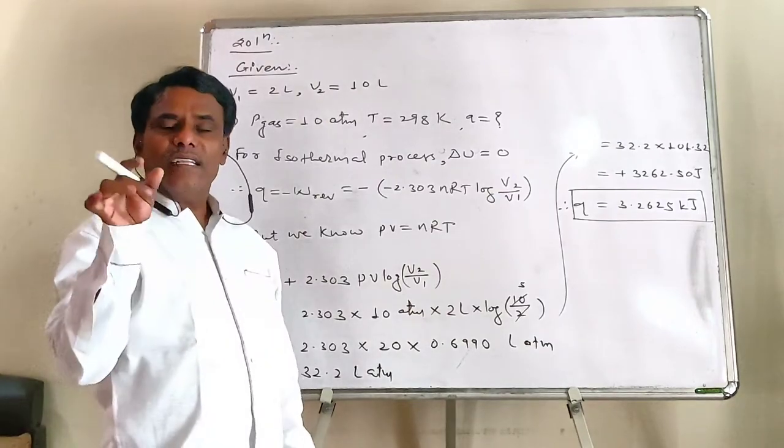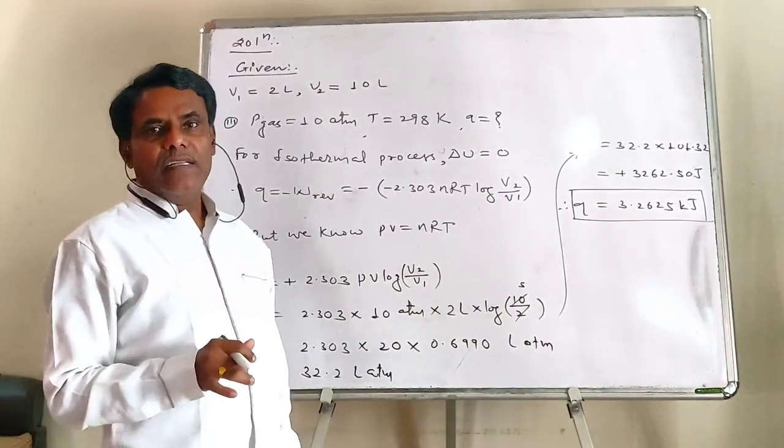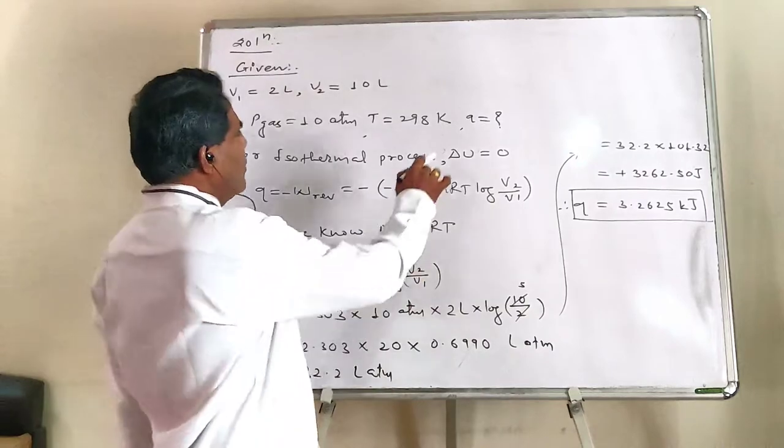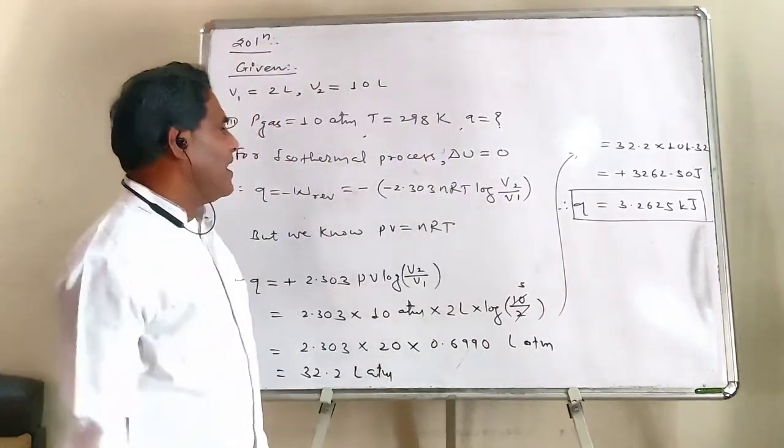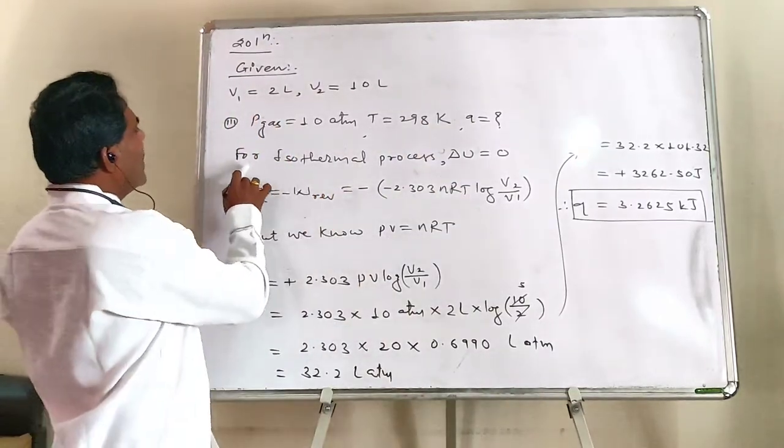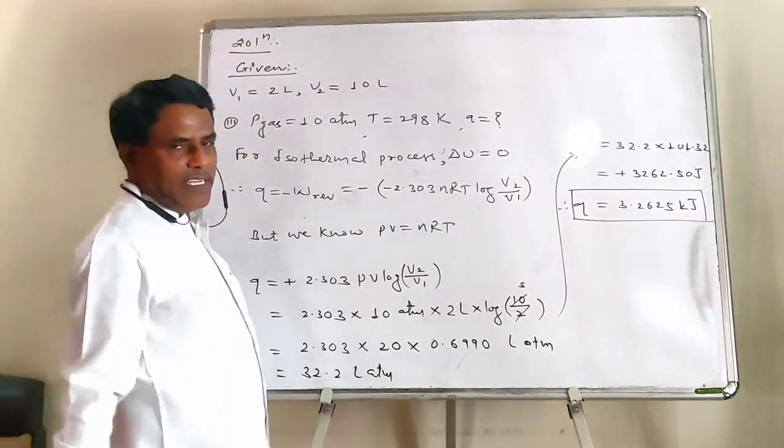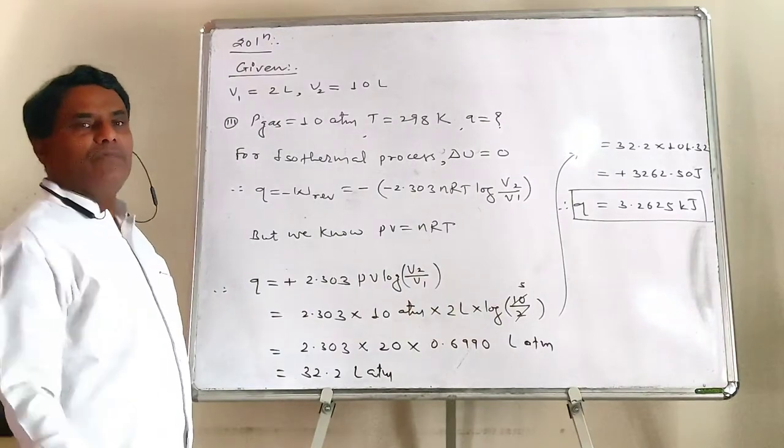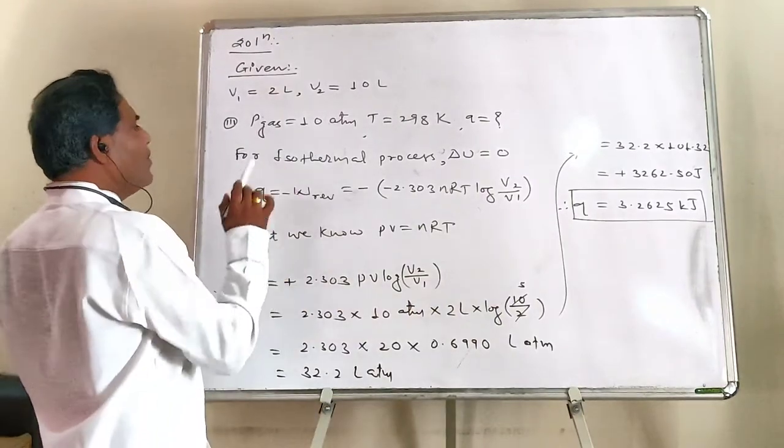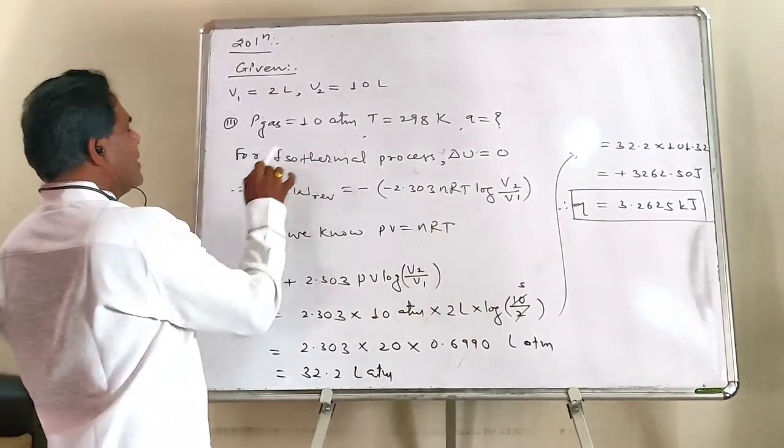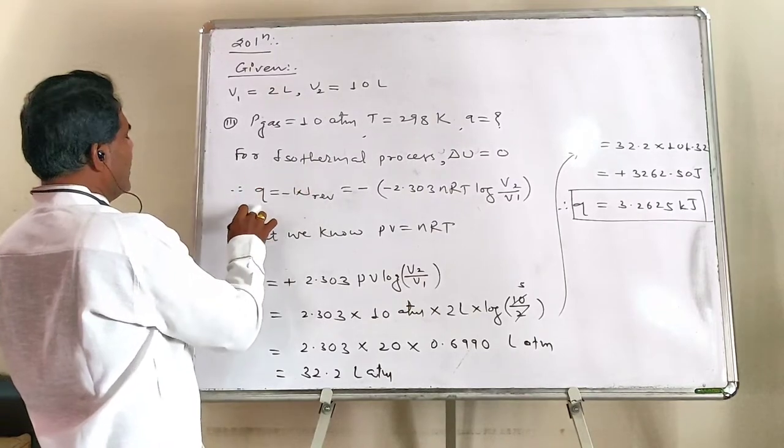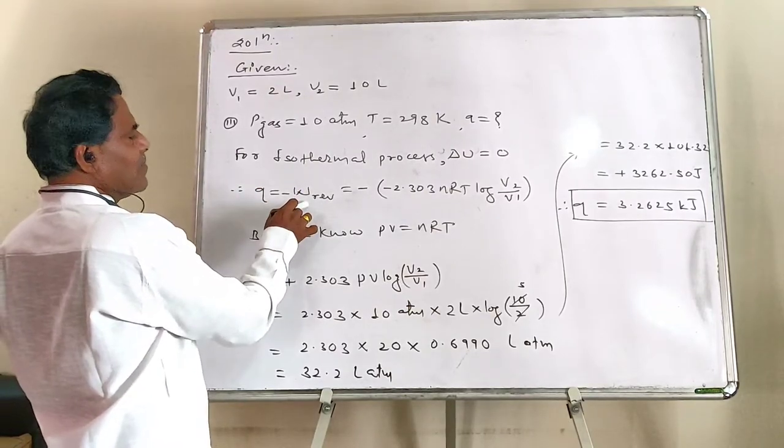Ye heat change, agar reversible way se hota hai, at 298 Kelvin, to heat change kya hoga, ye ha mein dekna hai. Again, we know, for an isothermal process, internal energy change, delta U is zero. Isn't it? Delta U is kya value, kya, rave bar, zero. We know, for isothermal process, first law becomes, q equals to minus W.